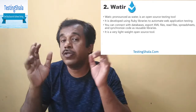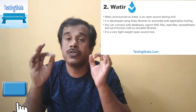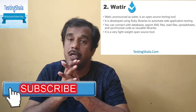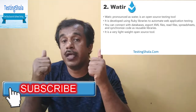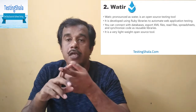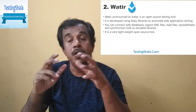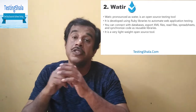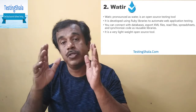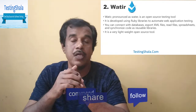The second best automation tool is Watir, which is also completely open source. Watir is developed using Ruby libraries and is also used to automate web applications. The main advantages of Watir are that it can connect to databases, export XML files, read files and spreadsheets, and synchronize code using shared or reusable libraries. It is also very lightweight compared to Selenium.